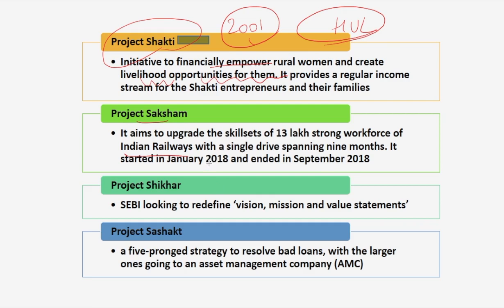Project Saksham was launched by Indian Railways as the country's largest time-bound upskilling exercise for its 13 lakh-strong workforce, aiming to upgrade skill sets in a single nine-month drive from January 2018 to September 2018. The need arose because Indian Railways was getting bad publicity due to derailments, accidents, poor services, and employee inefficiency. The mass skilling exercise aims for an image makeover by increasing productivity and efficiency of its employees.